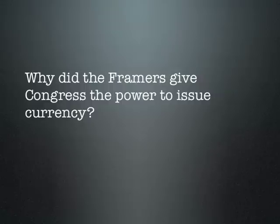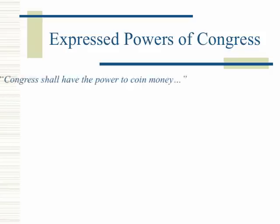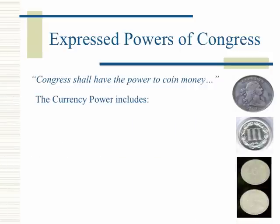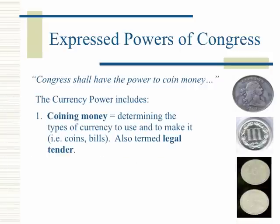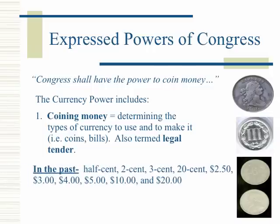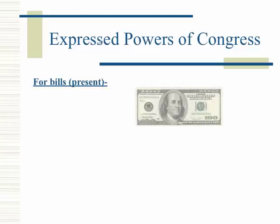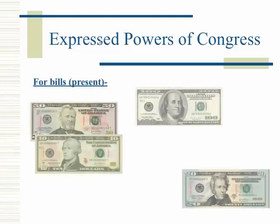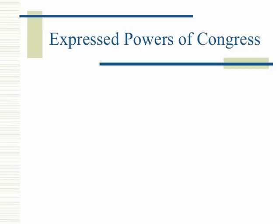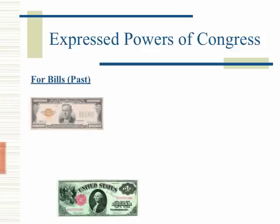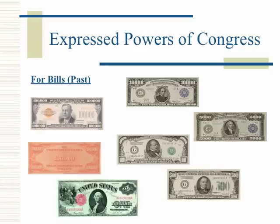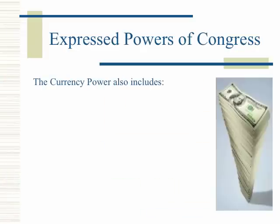Why did the framers give Congress the power to issue currency? Congress shall have the power to coin money. The currency power includes coining money, determining the types of currency to use and make it — also termed legal tender. The currency power also includes regulating its worth.